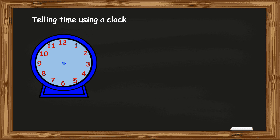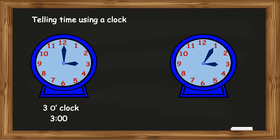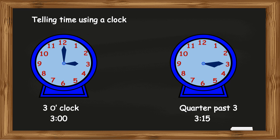Now we'll see how to tell the time using a clock. We know that a clock has two hands, a short hand or the hour hand and a long hand or the minute hand. When the minute hand is at 12 and the hour hand is at 3, then the time is 3 o'clock, which is written as 3:00 in figures. When the minute hand moves to 3, it means that 15 minutes have passed after 3 o'clock. This time is written as quarter past 3 or 3:15 in figures. Note that as the minute hand moved from 12 to 3, the hour hand has also shifted a little away from 3 towards 4.